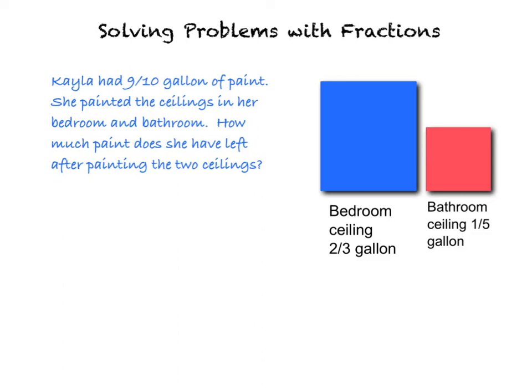So let's take a look at our word problem. Kayla had 9 tenths gallon of paint. She painted the ceilings in her bedroom and bathroom. How much paint does she have left after painting the two ceilings? So first things first, let's figure out what is it that the word problem wants me to do. The first thing I have to figure out is how much paint did she use when she painted both the bedroom and the bathroom.